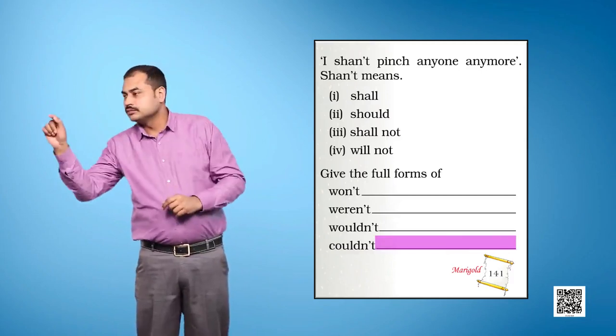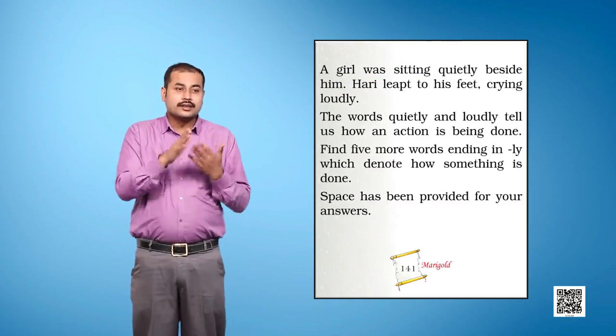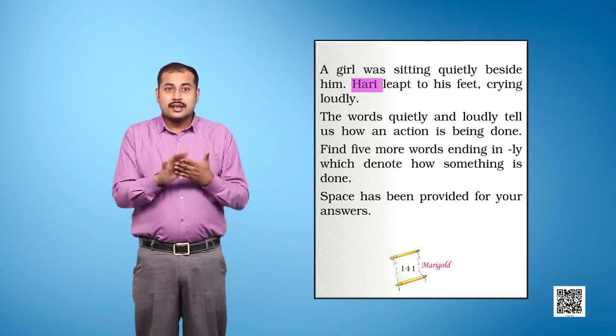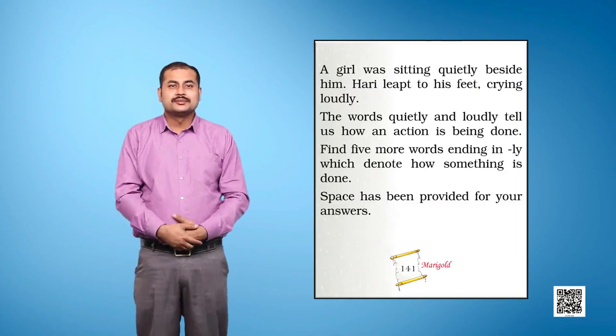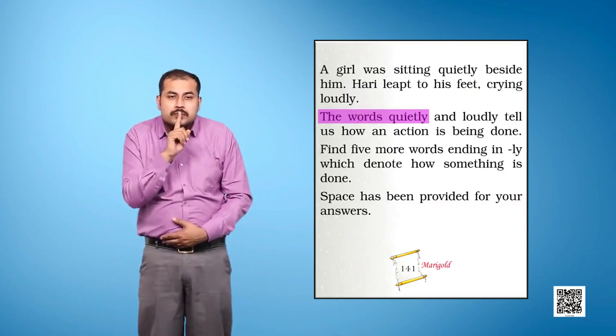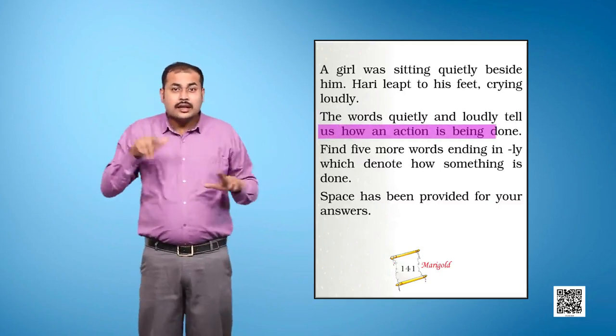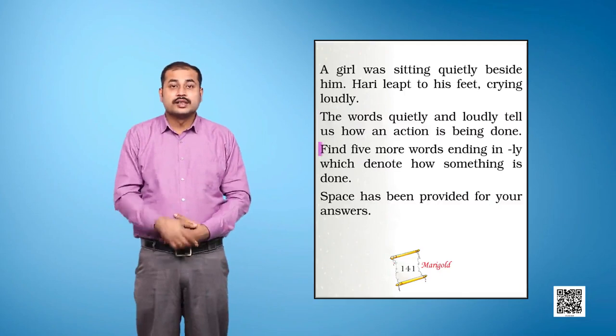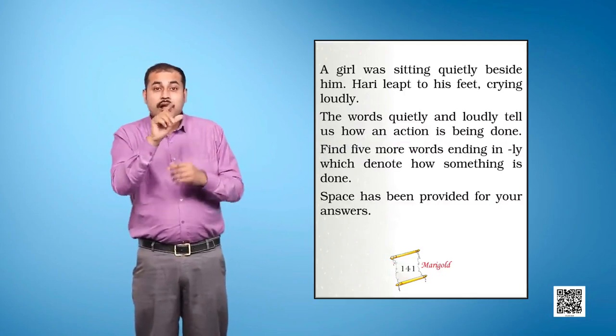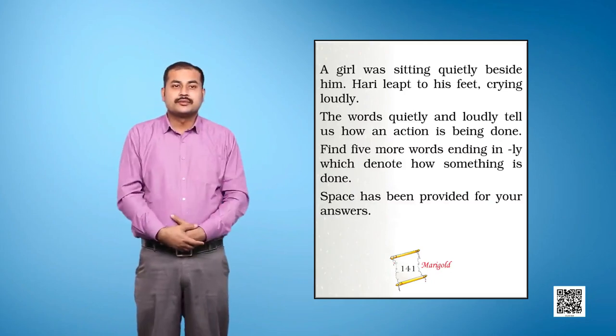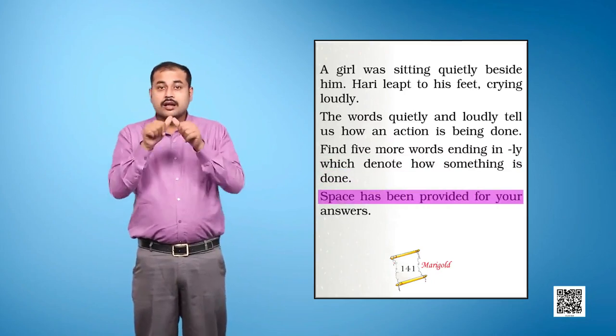A girl was sitting quietly beside him. Hari leapt to his feet, crying loudly. The words quietly and loudly tell us how an action is being done. Find five more words ending in L-Y which denote how something is done. Space has been provided for your answers.